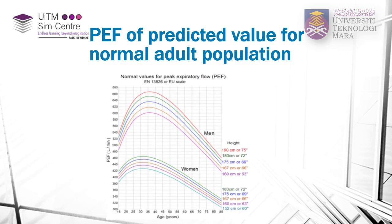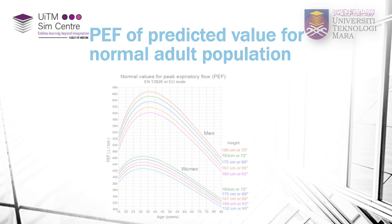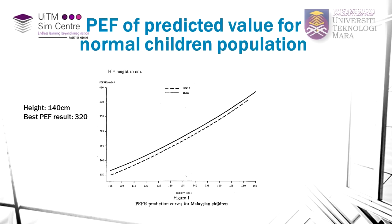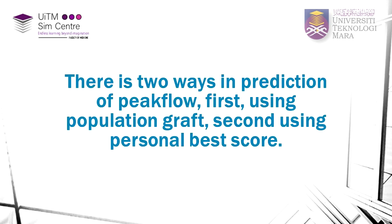This is a graph for the adult population and this is for the Malaysian pediatric population. Using the best score, this is how you plot on the graph. Remember, there are two ways to predict peak flow: first, using the population graph, and second, using the personal best score.